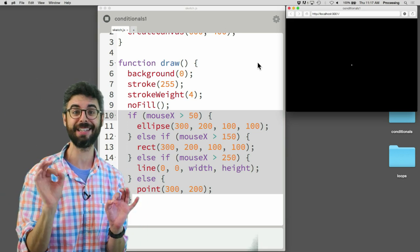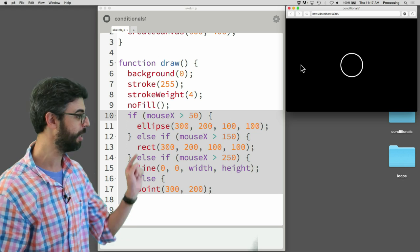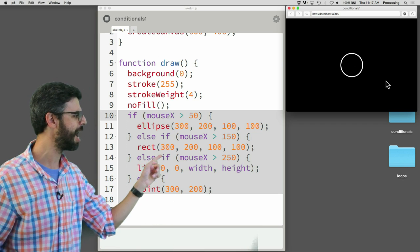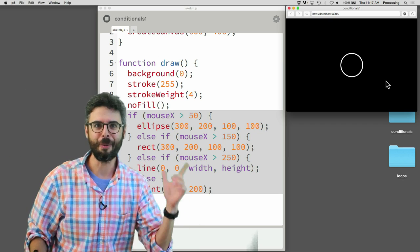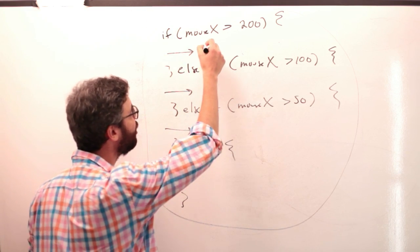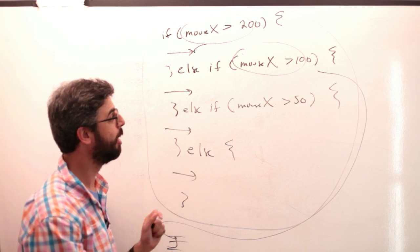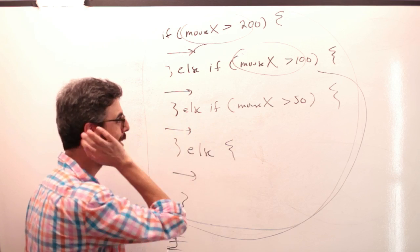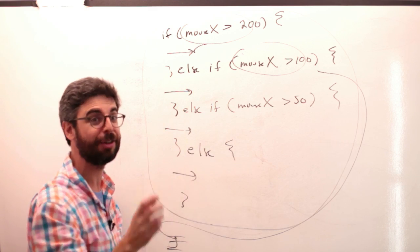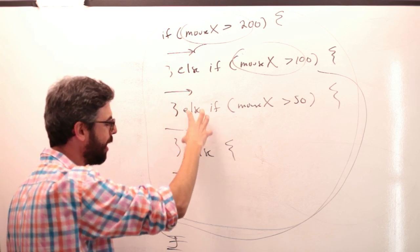We've got a point, which makes sense — it's not greater than 50, 150, or 250 — so we see a point. When the mouse gets to greater than 50, we get a circle. But why don't we ever see a rectangle or a line? Here's the key distinction: as soon as any one condition evaluates to true, the program kicks out of the if statement and doesn't check the next one. Only one section of code can be executed. So if mouseX is 275 — is 275 greater than 50? Yes. An ellipse is drawn, and we kick out. The order of these conditions really, really matters.